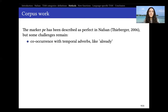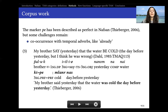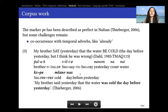Let us now talk about the methods that are the focus of this talk. The marker P in Nafsan has been described as perfect. When Nick described P as perfect, he gave several functions such as resultative and anterior. But some challenges remain — for instance, P co-occurs with temporal adverbs like 'yesterday' or 'day before yesterday,' just as we would expect from already but not a perfect. For example, from the Dahl questionnaire item 85: 'My brother said yesterday that the water was cold the day before yesterday.' Here we have the third-person proclitic perfect and P with 'cold, day before yesterday' — something expected from already rather than perfect.